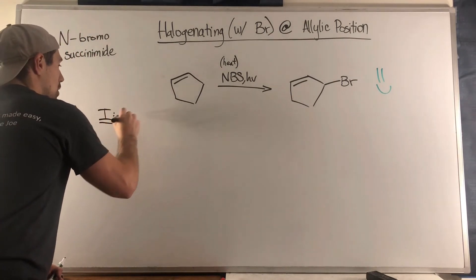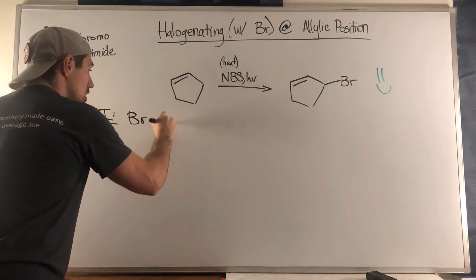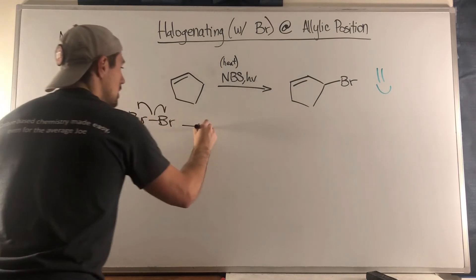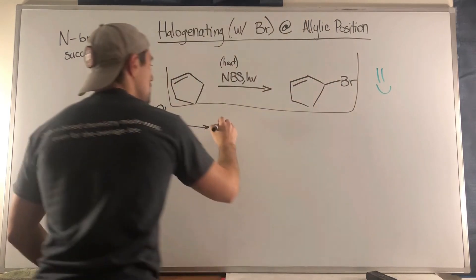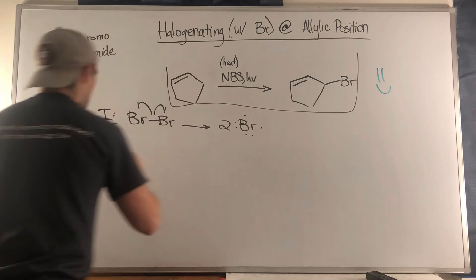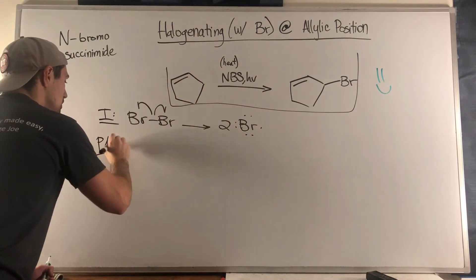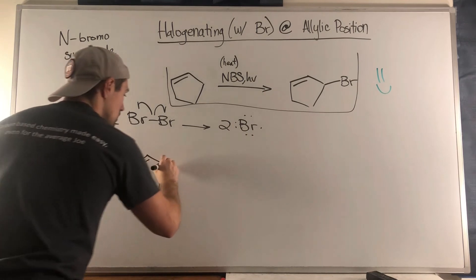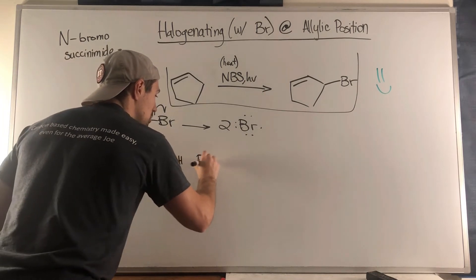Literally the mechanism is so similar. You have initiation where you have the low concentration of Br2 homolytically cleaves - I will box this so we don't get confused - you have two bromine radicals, then propagation one, this is where we'll make our radical.